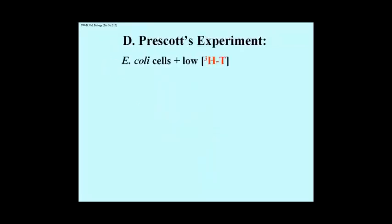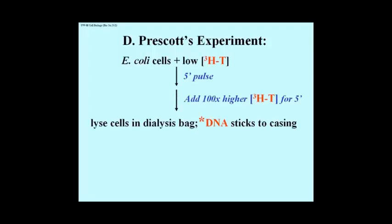David Prescott did the experiment that distinguished between unidirectional and bidirectional replication. Cultures of E. coli were exposed to a low concentration of tritiated thymidine for a few seconds, and then to a higher concentration of the radioactive precursor for another few seconds, before the cells were lysed in a dialysis bag.